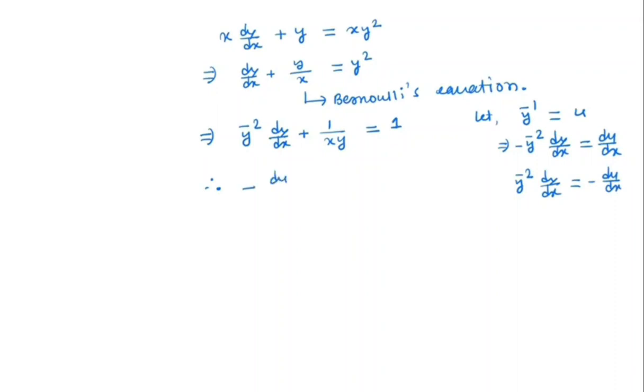So, we get here minus du/dx plus u by x is equal to 1. Simplifying this, we get du/dx minus u by x is equal to minus 1.